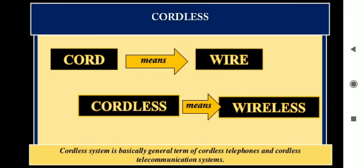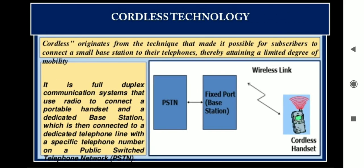In this diagram there is the base station, then the cordless handset, and also one block for the PSTN — that is the Public Switched Telephone Network. The base station is attached to the phone jack through a standard phone wire connection, and the phone system looks just like a normal phone.